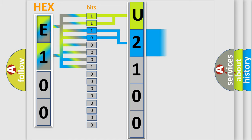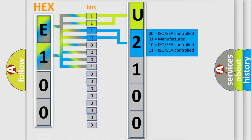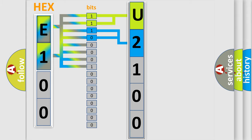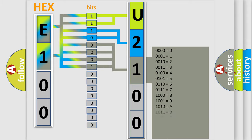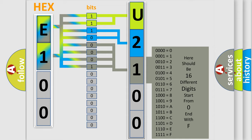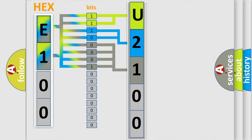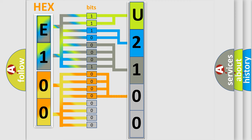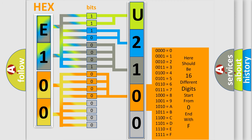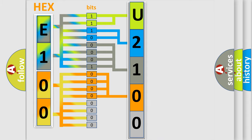The next two bits determine the second character. The last four bits of the first byte define the third character of the code. The second byte is composed of a combination of eight bits — the first four bits determine the fourth character of the code, and the combination of the last four bits defines the fifth character.